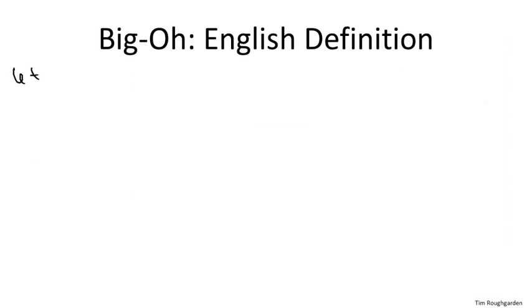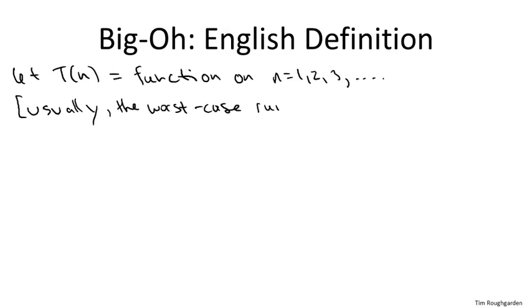Big O notation concerns functions defined on the positive integers. We'll call it T of n. We'll pretty much always have the same semantics for T of n. We're going to be concerned about the worst case running time of an algorithm as a function of the input size n.